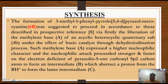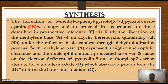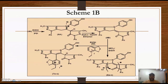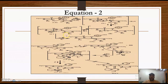In the second section, formation of 3-methylphenyl-pyrrolo-5,4-d-pyrazolo-mirror cyanine 6p is suggested to proceed according to this description: first, liberation of the methylene base a and acyclic heterolytic quaternary salt 4b, affected with catalyst via dehydration, which we can see here in the scheme. We can find that 4b gives us 6a, and this equation describes what we did for it.